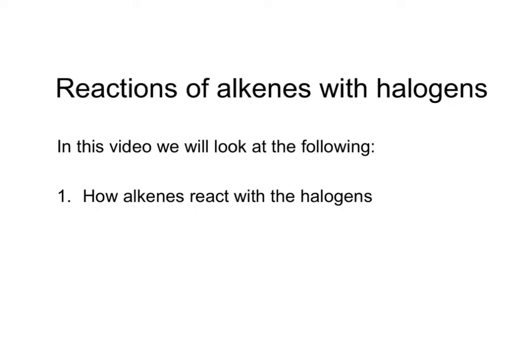In this video we're going to look at how the alkenes react with the halogens. Now remember halogens are the elements in group 7, so that's fluorine, chlorine, bromine and iodine. And we're going to look at how they react with the alkenes.